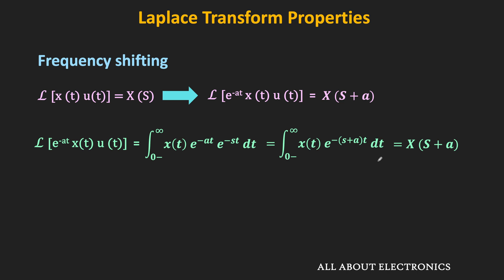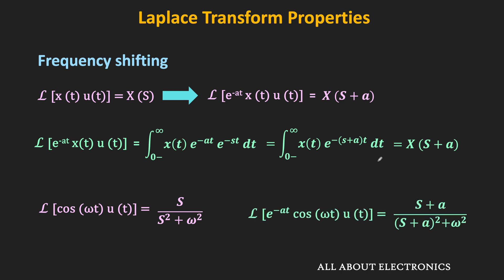In the previous video, we also used this frequency shifting property. For example, the Laplace transform of cos(ωt)·u(t) is s/(s² + ω²). When this function is multiplied by e^(-at), s gets replaced by s+a. Therefore the Laplace transform of e^(-at)·cos(ωt) equals (s+a)/((s+a)² + ω²). Whenever we see an exponential term in a function, we can apply this frequency shifting property of the Laplace transform.